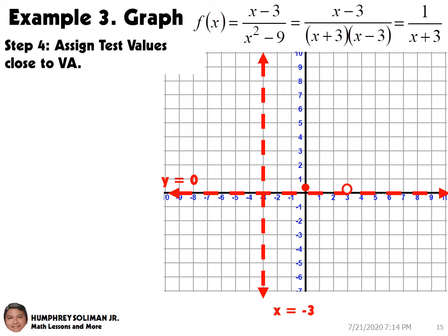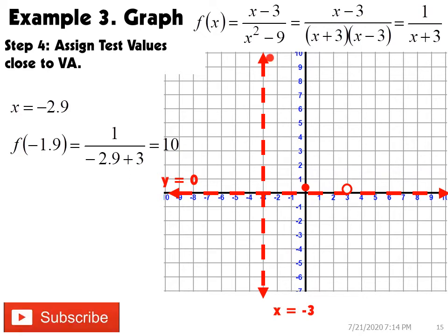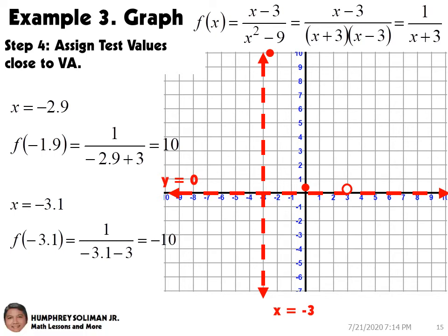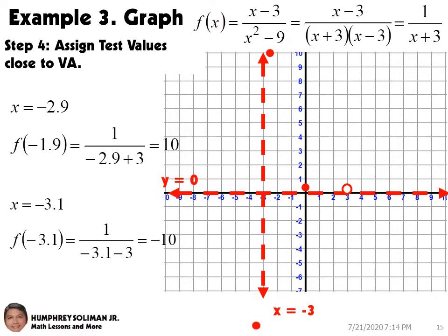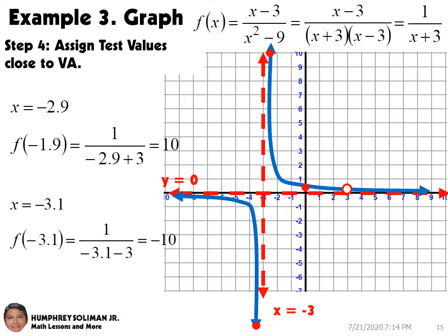For step number 4, we need to assign test values close to our vertical asymptote. From the right side of our vertical asymptote at x equals negative 3, we use x equals negative 2.9. This gives a y value of 10, so we plot the point (−2.9, 10). The graph goes upward as it approaches the vertical asymptote from the right, and goes downward as it approaches from the left. We are now ready to graph our rational function.